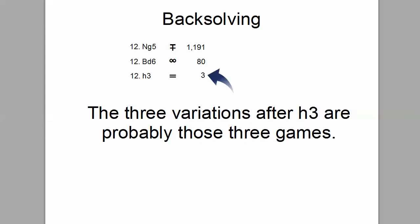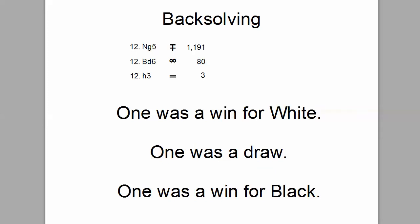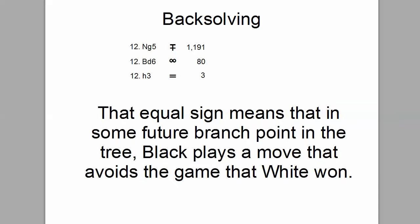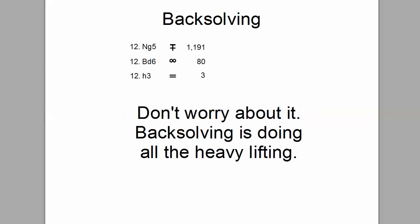The other moves would also be backsolving. The three variations after h3 are probably those three games. Here's a question: remember those three games after 12 h3 from the game database tree? One was a win for white, one was a draw, one was a win for black. The question is, why did this position backsolve to a draw? That equal sign means that at some future branch point in the tree, black plays a move that avoids the game that white won. And at some future branch point, white can play the move that draws, rather than the move from the game that black won. Don't worry about it — backsolving is doing all this heavy lifting.